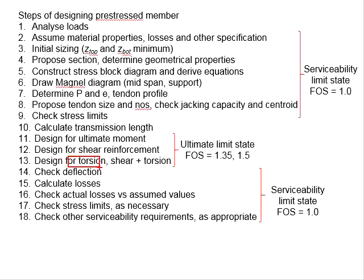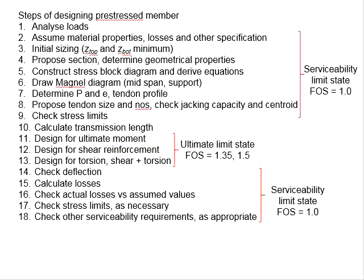Next, you will need to design for torsion and also the combined conditions of shear and torsion. Theoretically, you must ensure the shear resistance, torsion resistance, and combined shear-torsion conditions are satisfied. Next, we will check for deflection. It is important to ensure the member does not experience excessive deflection. The equations for the deflection check will be similar to those in reinforced concrete design in Eurocode 2.